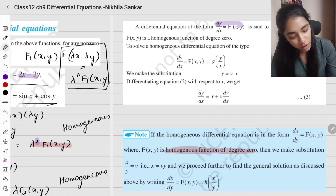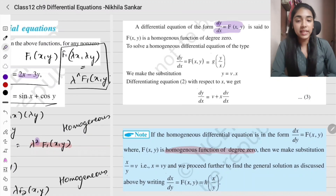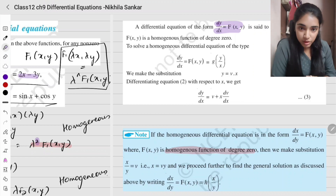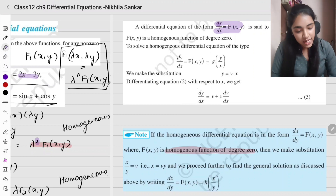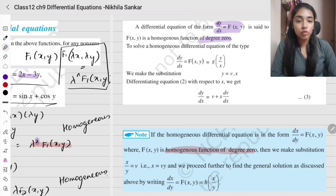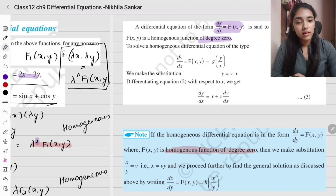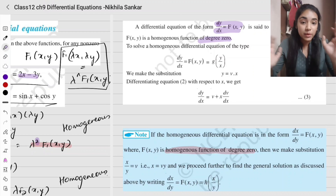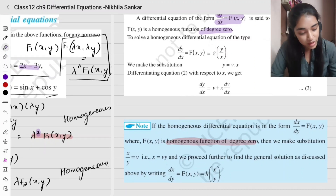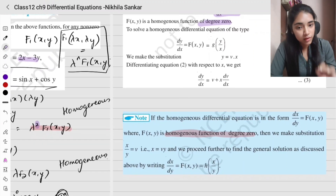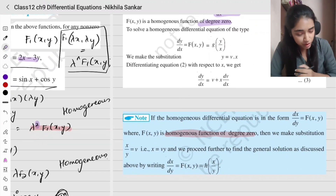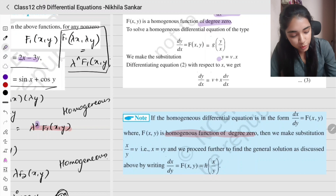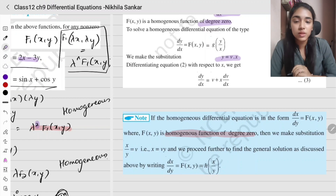To solve a homogeneous differential equation, you have dy/dx = f(x, y). The equation is homogeneous if f(lambda x, lambda y) = lambda⁰ · f(x, y), i.e., degree zero. To solve it, we make the substitution y = vx, so that y/x = v. This converts the equation into variables v and x, which is easier to solve.